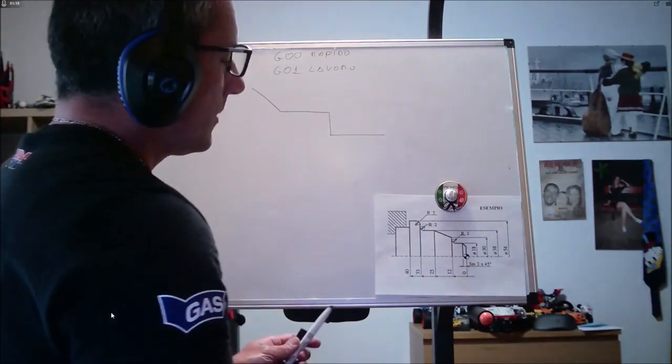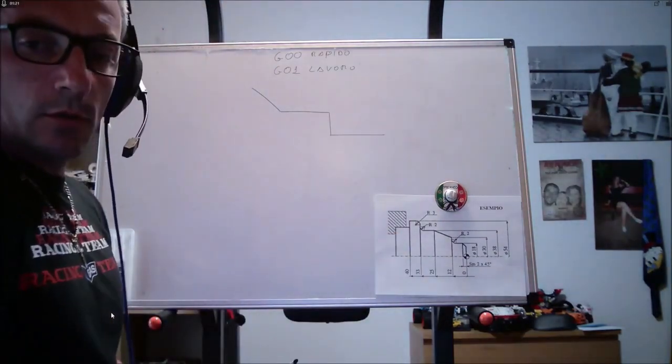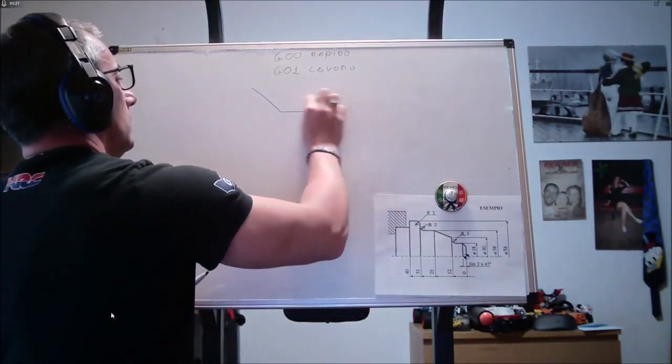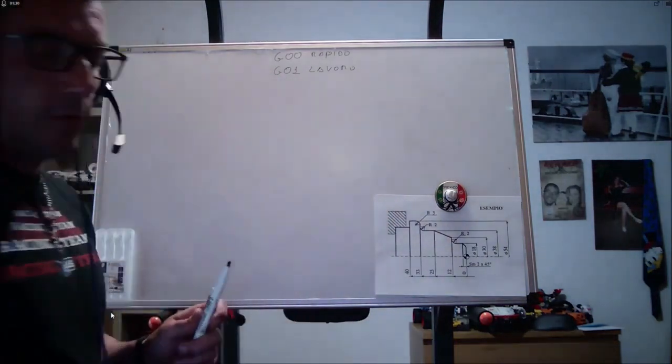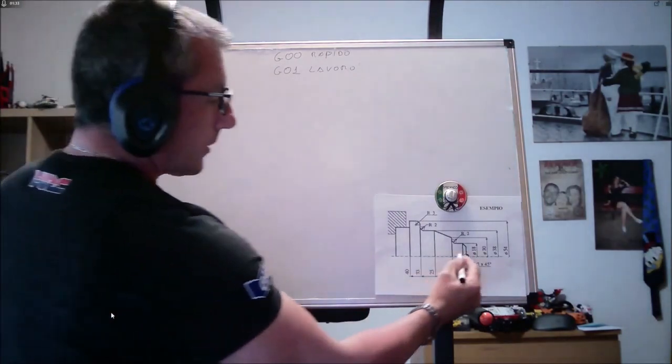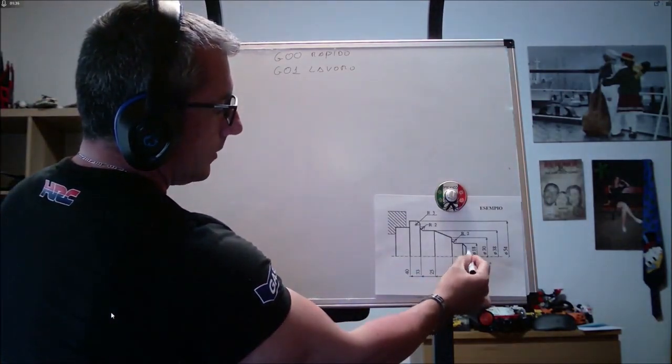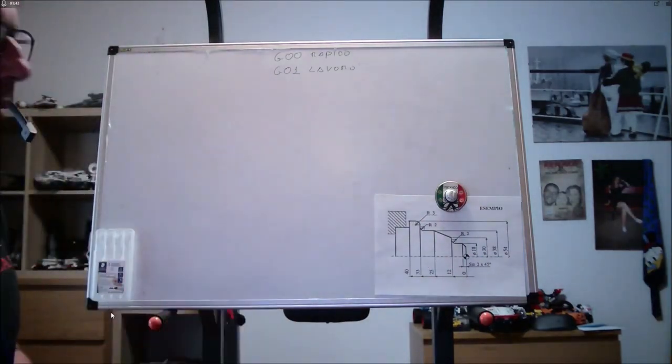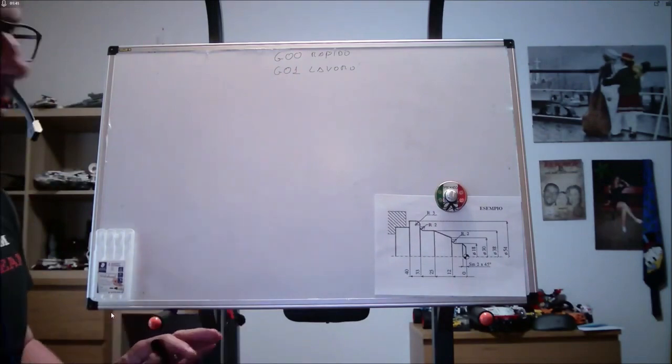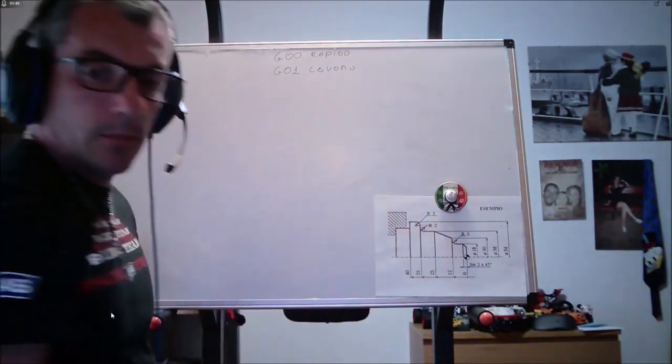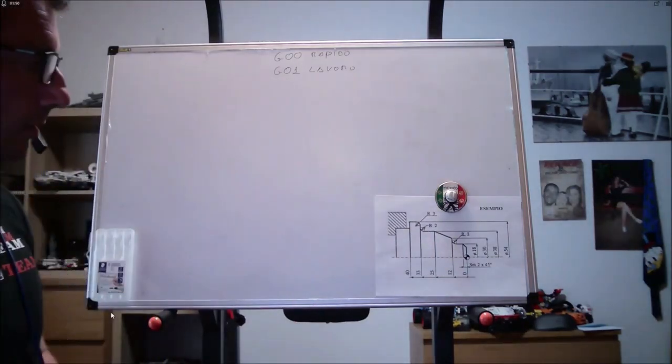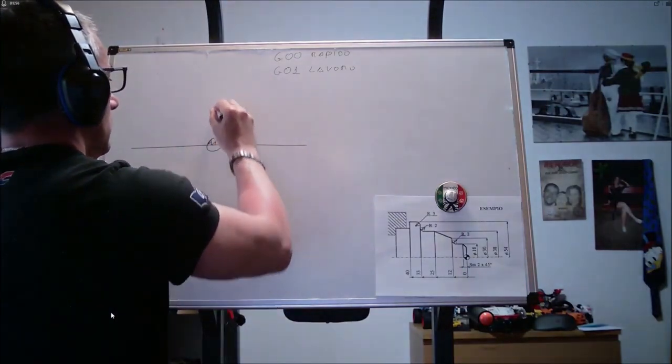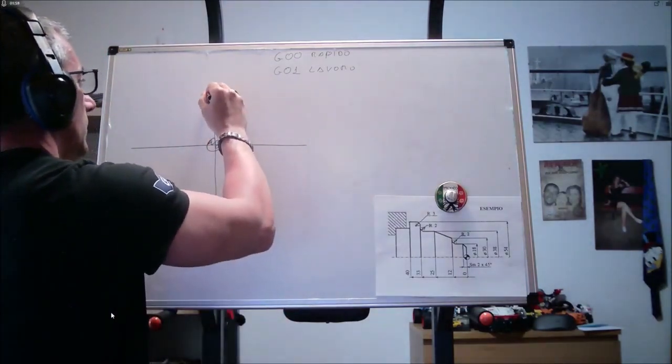Facciamo un piccolo esempio partendo da questo disegno, ignorando però completamente i raggi. Dimentichiamoci di dover lavorare un pezzo meccanico, ma pensiamo solo di dover percorrere il nostro pezzo da qua, origine, fino a qua. Siamo un punto nello spazio e nello spazio dobbiamo muoverci. Qua, qua e qua abbiamo degli spigoli vivi, nessun paraggio.